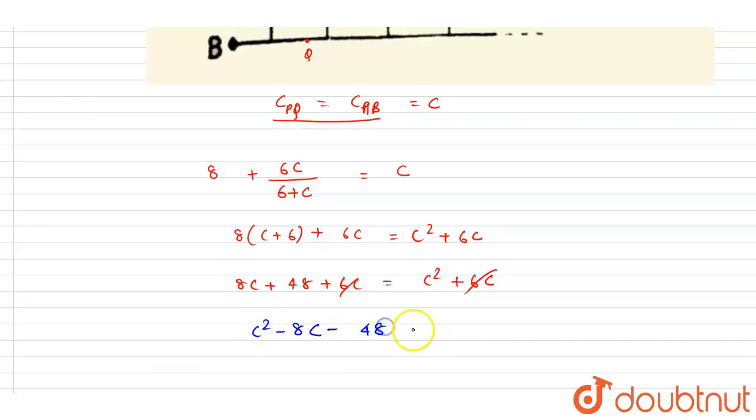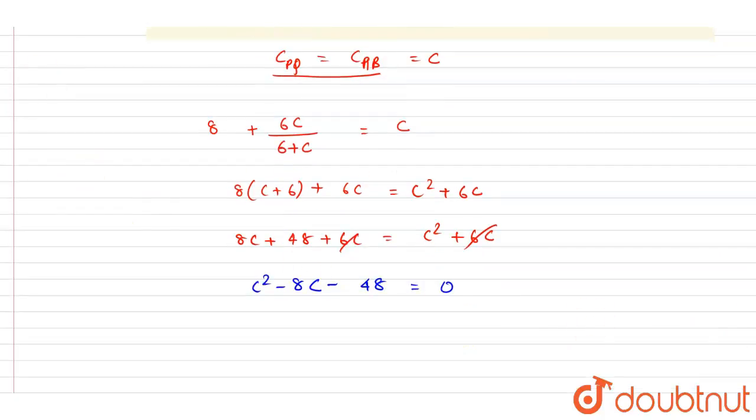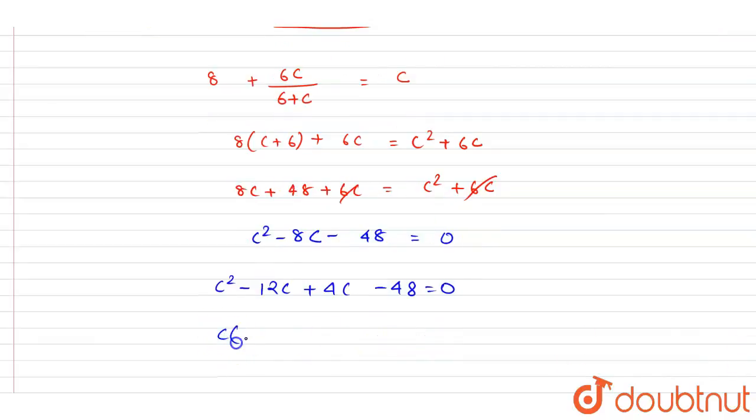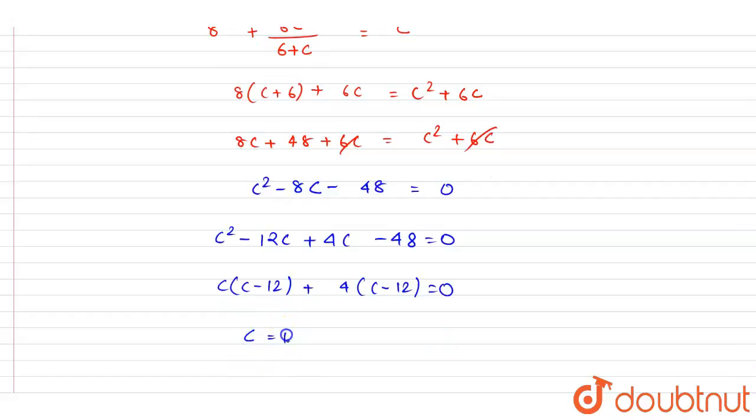minus 48 equals zero. All right, now C squared minus 12C plus 4C minus 48 equals zero. So if I take this C common here, it will be C minus 12, and from here we can get the positive value. The only positive value of C is 12, so this is the equivalent capacitance between A and B and the answer of this question.